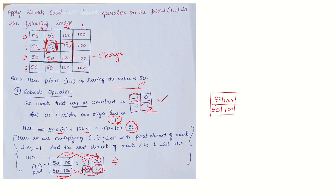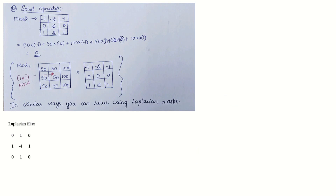The answer for Robert's operator is 50. If you are asked, you can write the new value replacing the old pixel value in the image — that is the standard procedure. Since only the application was asked here, we stop at this point. Usually, we write the new value in place of the old value.